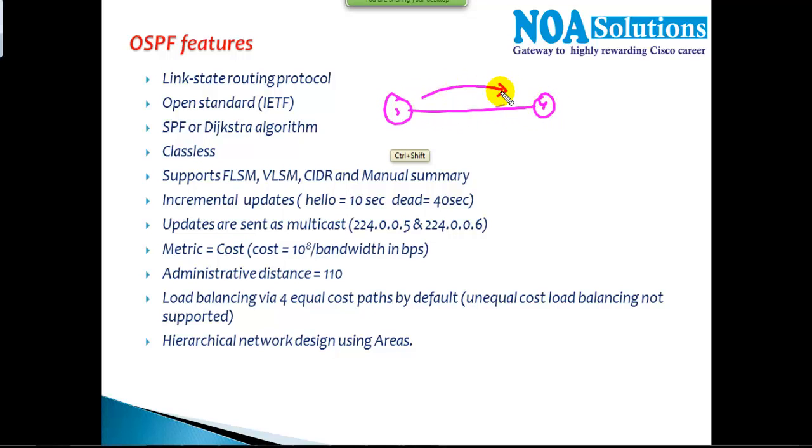The first time it will send the complete routing information. The next time it will send only whenever there is a change—maybe after one hour, 20 minutes, 15 minutes—whenever the network goes down or comes up.